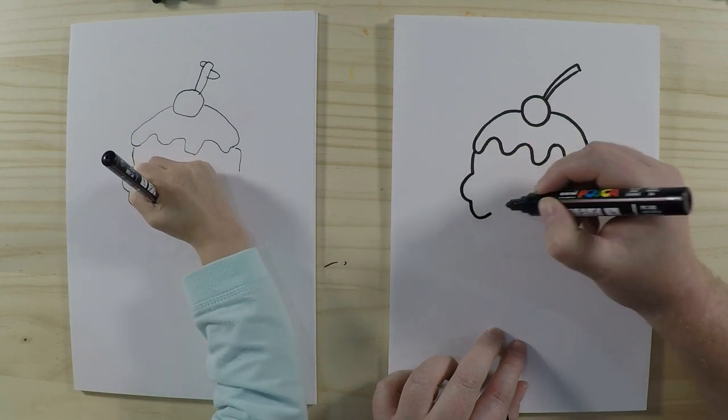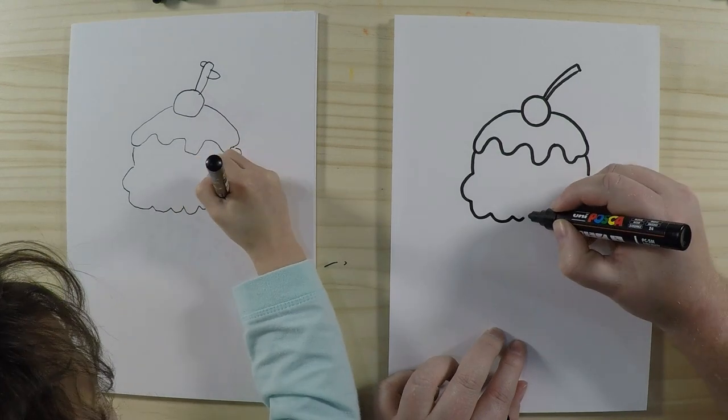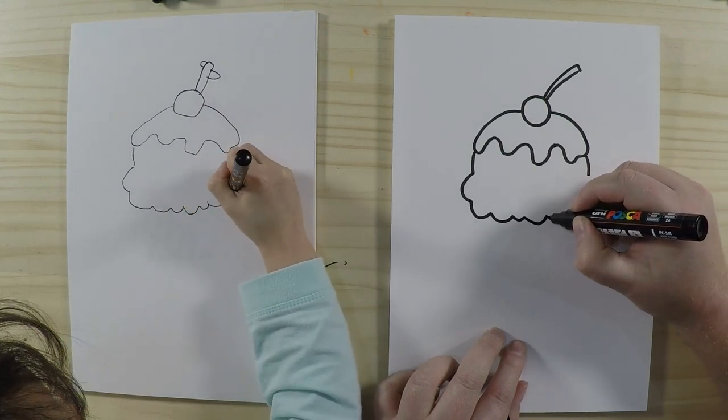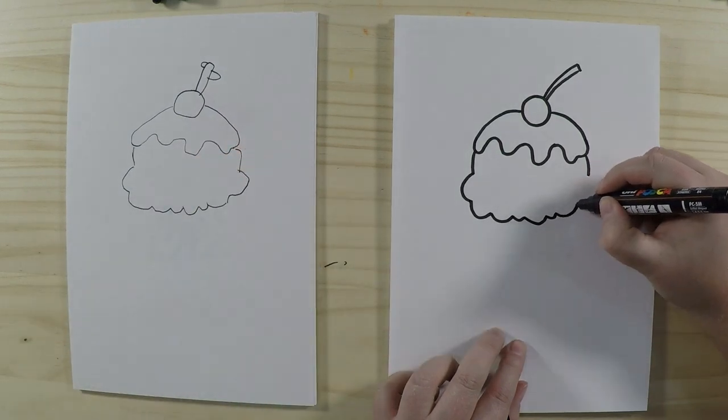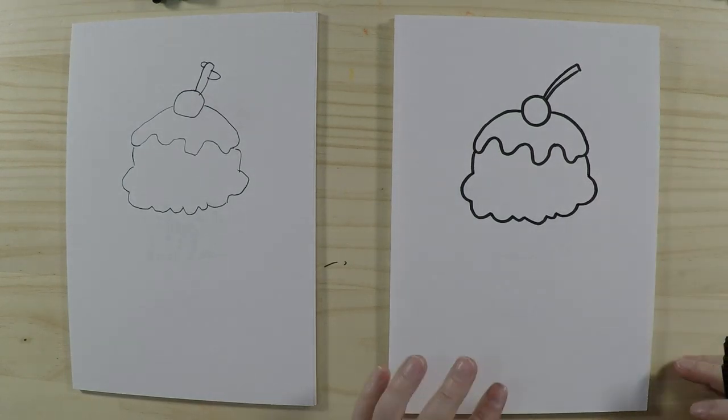We're going to do the edge of the ice cream, and we're going to do these little curves. Bumps, yeah. You can make them all random shapes and sizes to make it look interesting, like an ice cream. Yeah, cool, so it's looking good.